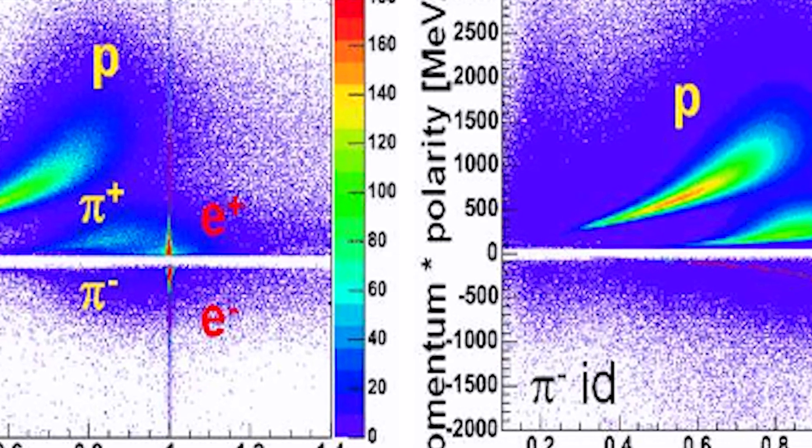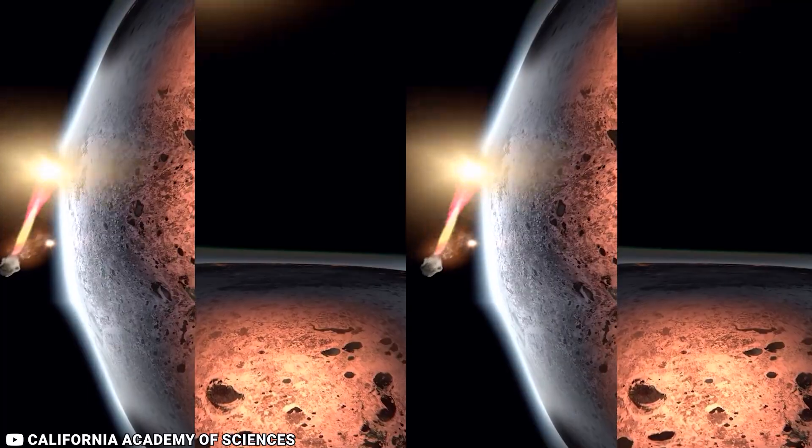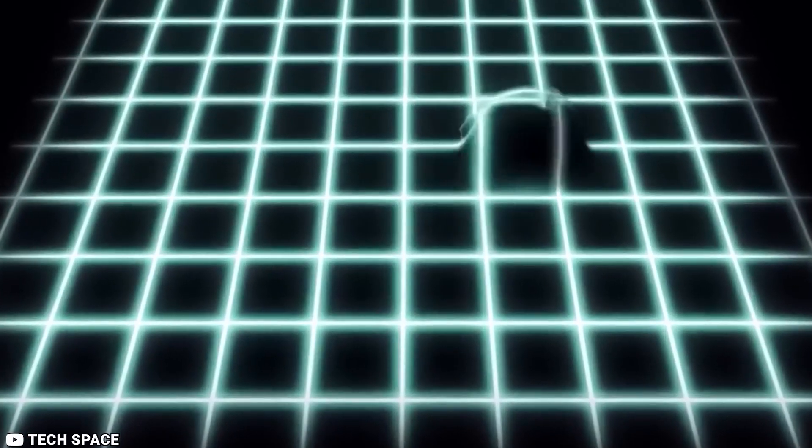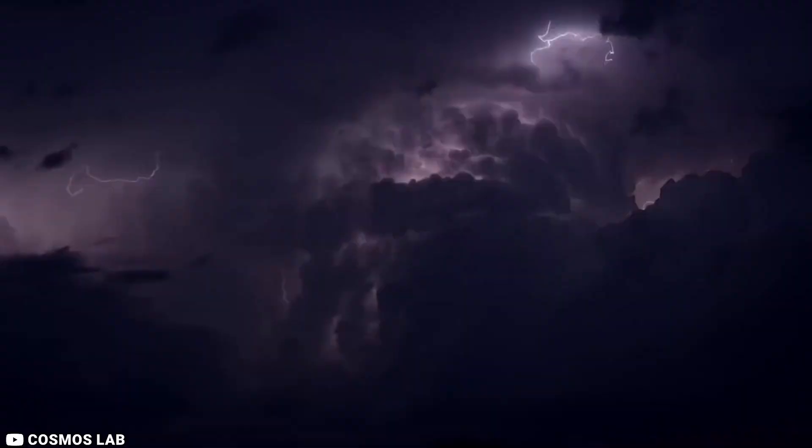The W boson's mass is related to that of other particles, notably the notorious Higgs boson. Thus, if this most recent disparity persists, the gold standard model may have even another fault.